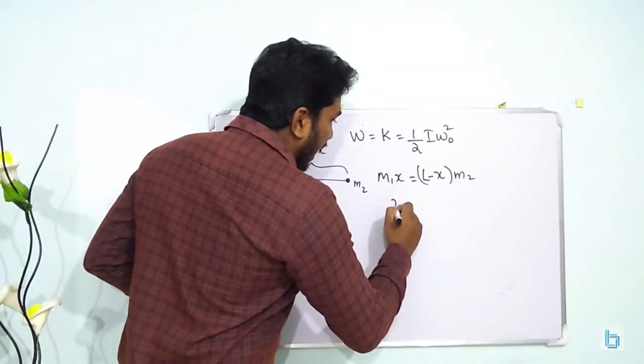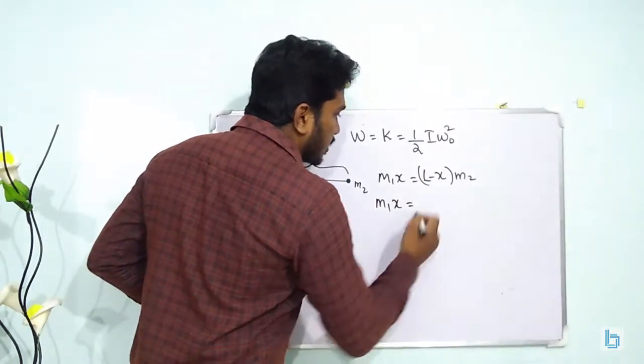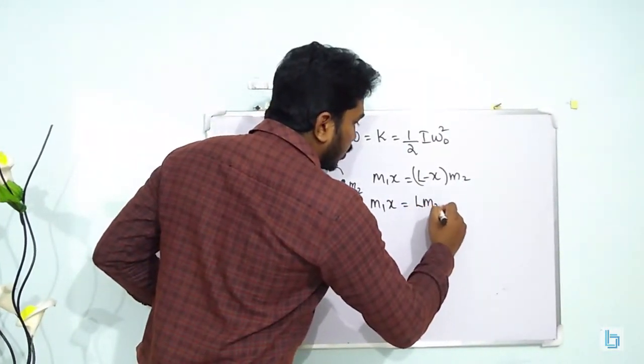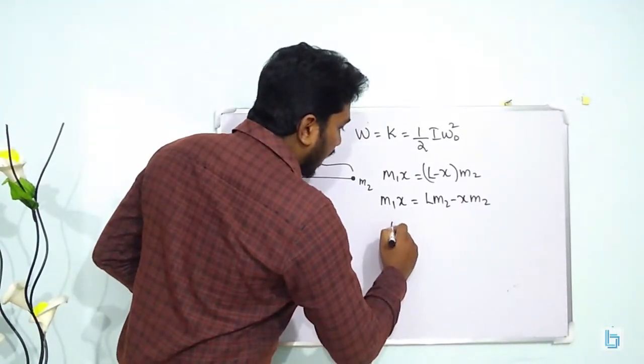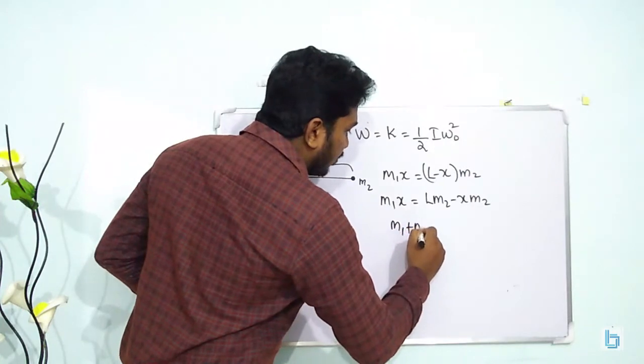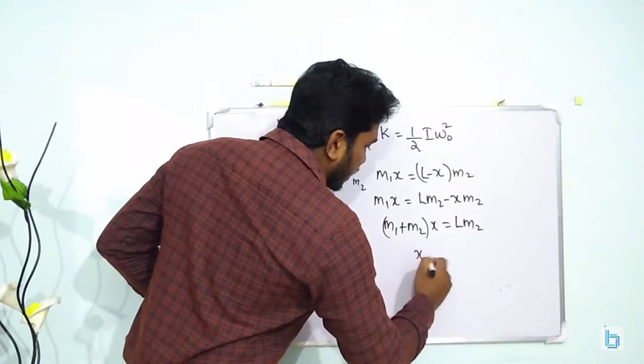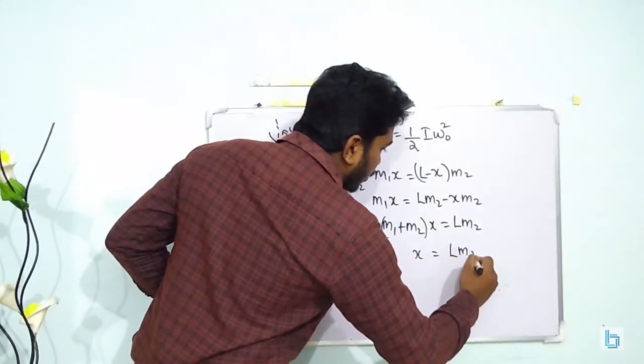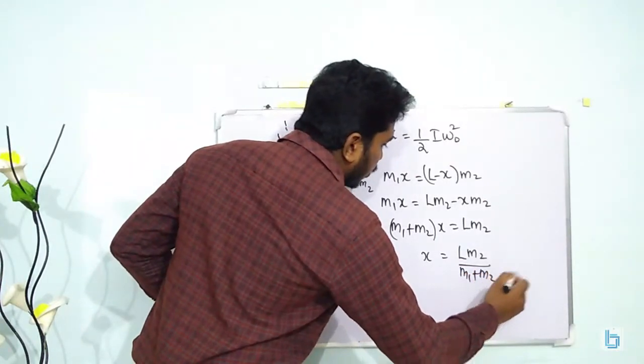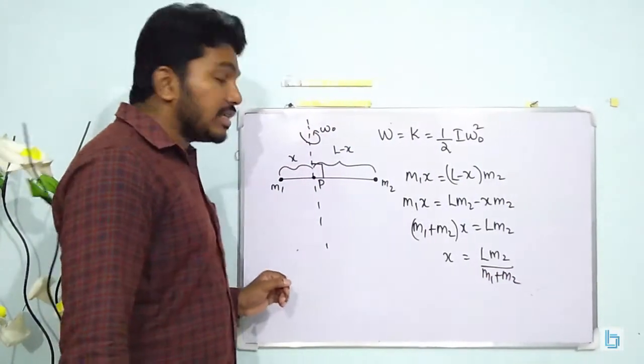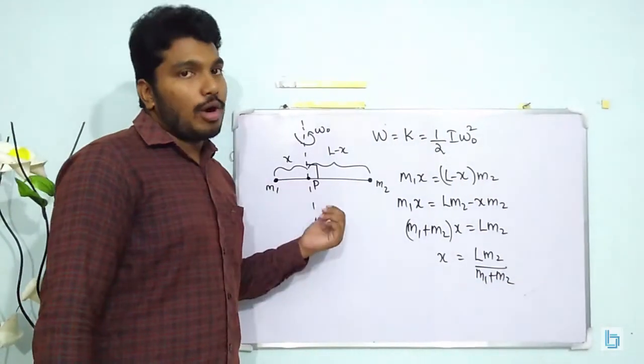Solving this equation: (M₁ + M₂)x = M₂L, therefore x = LM₂/(M₁ + M₂). So the point is at a distance of LM₂/(M₁ + M₂) from the mass M₁.